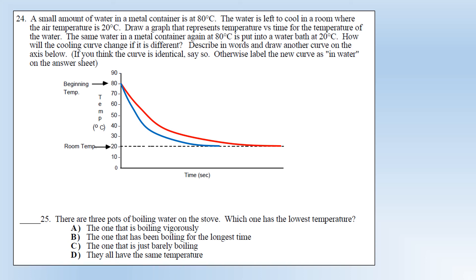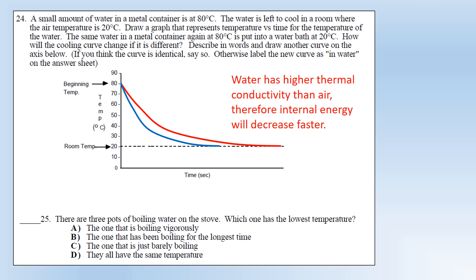We've got three pots of boiling water on a stove - which one has the lowest temperature? The correct answer is option D: they all have the same temperature. If water is boiling, its temperature is constant at the boiling point. It doesn't matter how long you've been boiling - if it's still boiling, it's at the same boiling point temperature.